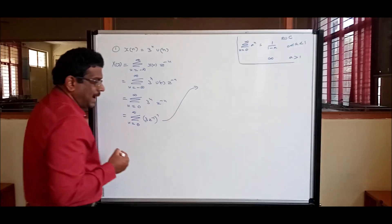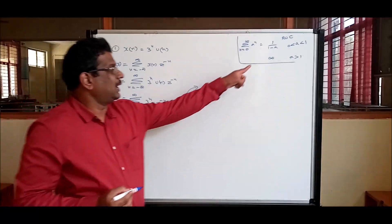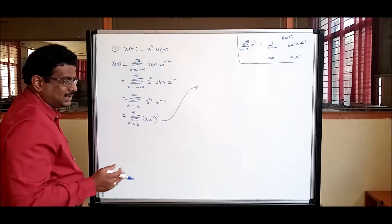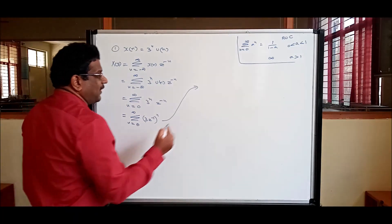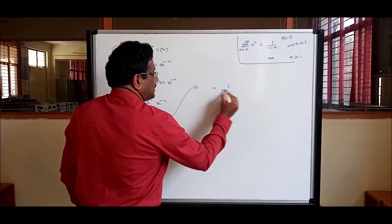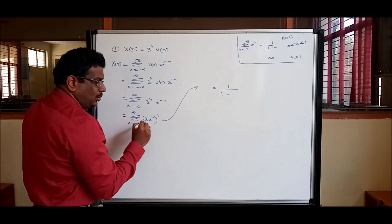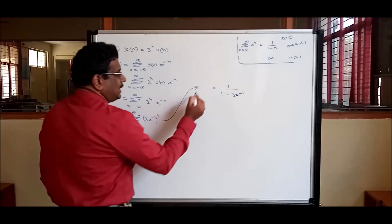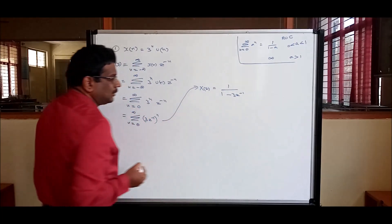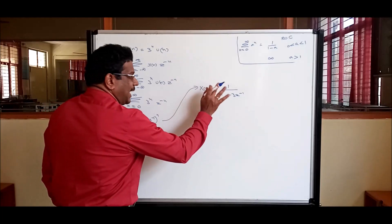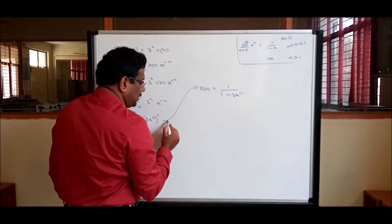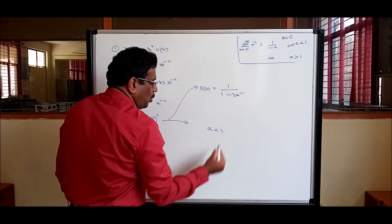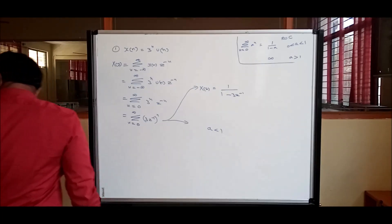There are two answers: infinite and 1/(1-a). We need only the finite answer because Z-transform must converge. The finite answer is 1/(1 - a), where a = 3z⁻¹. So X(z) = 1/(1 - 3z⁻¹). This result is valid under the condition that a must be less than 1, i.e., |3z⁻¹| < 1.